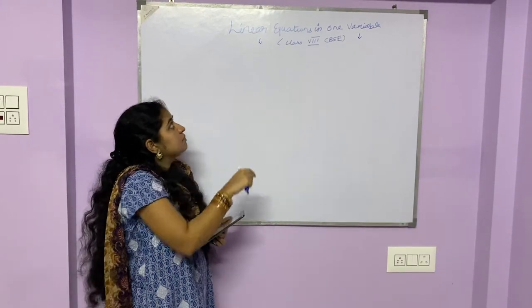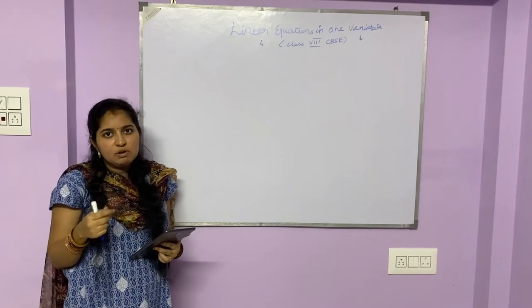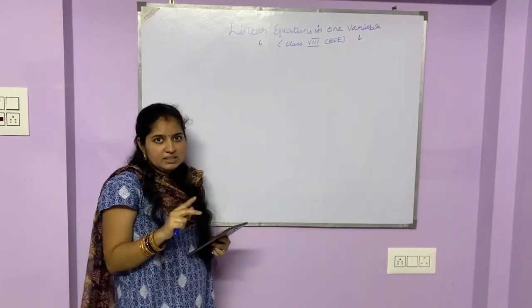To put it in simple words, a linear equation is the equation in which the highest power of a variable is 1. Let's take example of two equations.